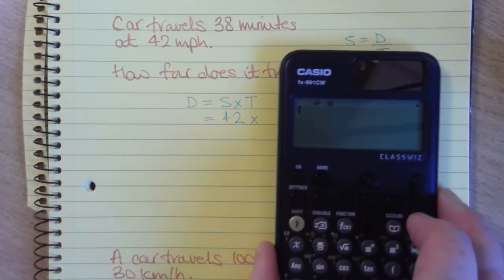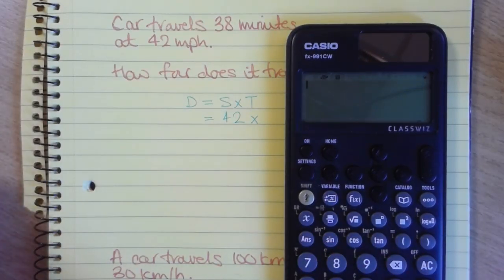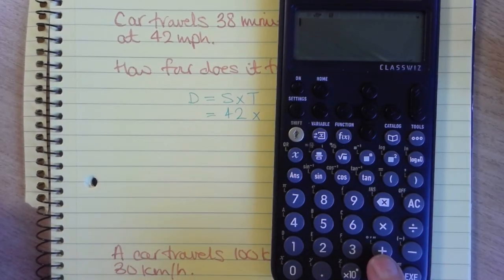Our speed is 42 miles per hour. When we put that in our calculator, we want to put the 38 minutes in as an amount of hours. To do that, we use the second function of plus.